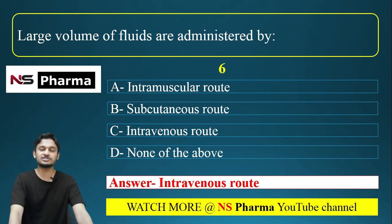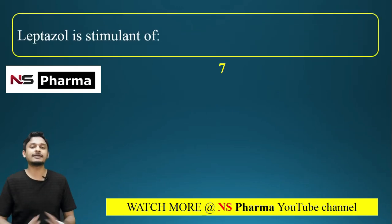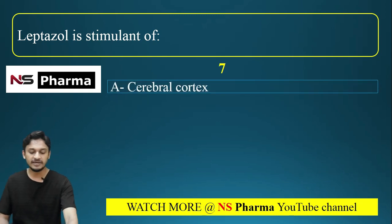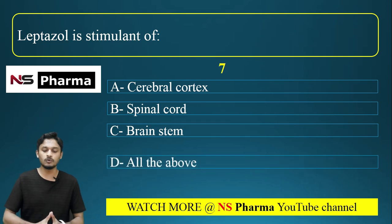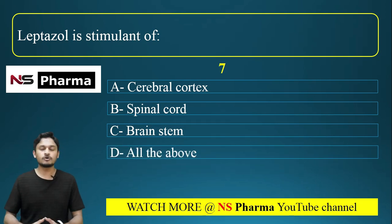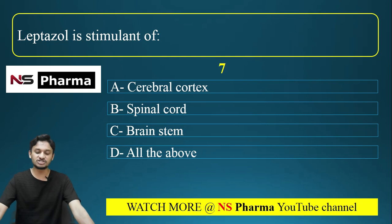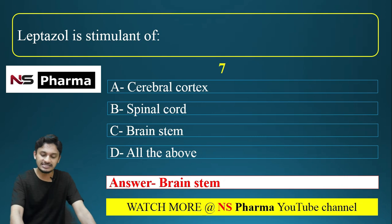Question number seven: Leptazol is a stimulant of — Option A, cerebral cortex; Option B, spinal cord; Option C, brain stem; Option D, all of the above. The correct answer is Option C — Leptazol is a stimulant of the brain stem.